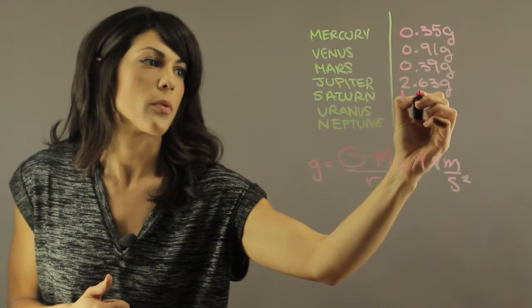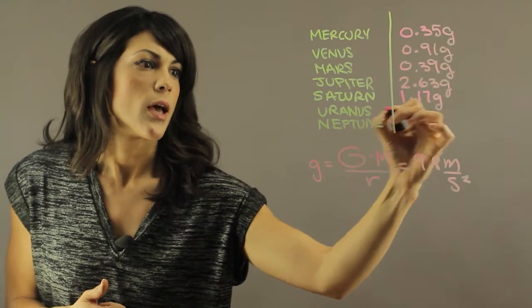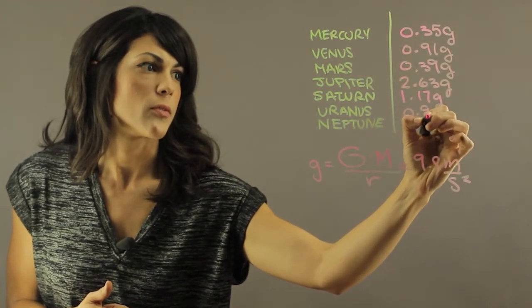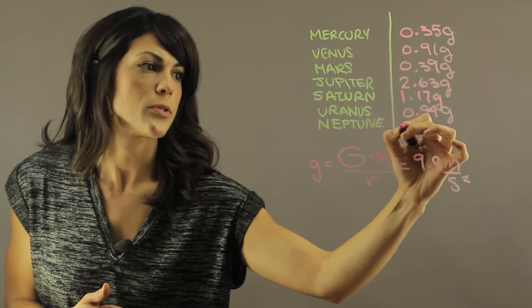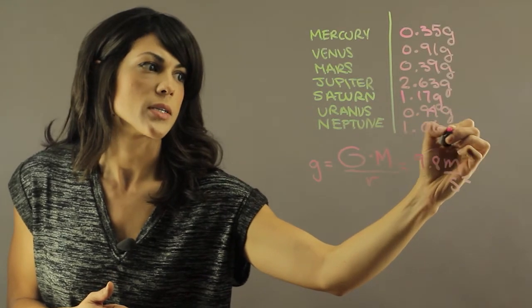For Saturn is 1.17 g, and then Uranus is 0.94 g, and Neptune is 1.06 g.